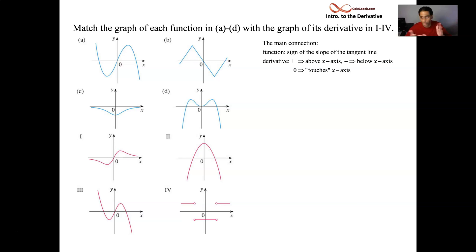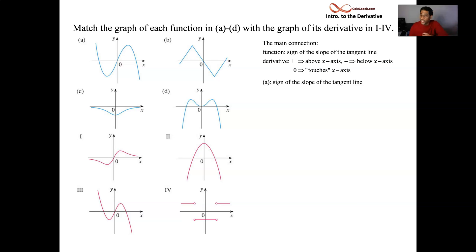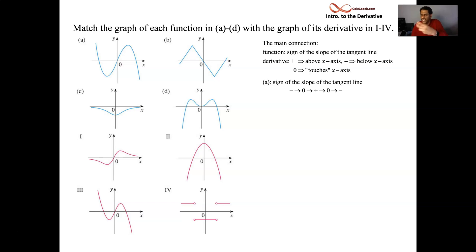Graph A is decreasing, then has a zero sloping tangent line, then it's increasing, then a zero sloping tangent line, then decreasing again. So it's negative slope, zero, positive slope, zero, negative slope. What kind of graph is below the x-axis, then hits the x-axis, then is above the x-axis, then hits the x-axis, then is below the x-axis? It's got to be number two — it's the only one that does it.